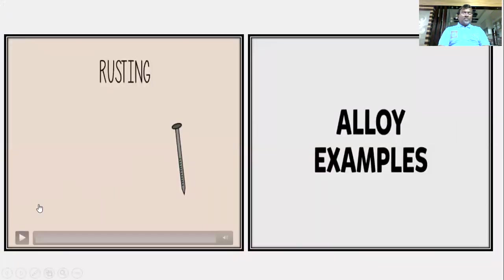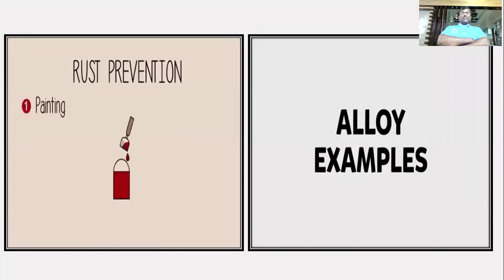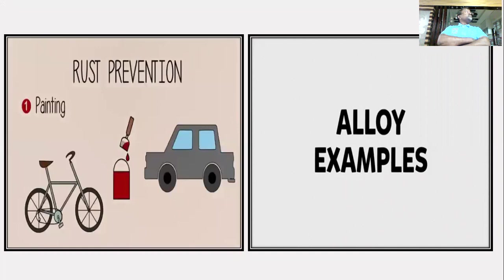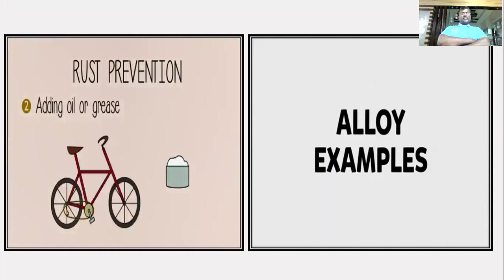Let us watch a small video about rusting and preventive methods. Rusting can be very costly if we have to constantly replace items made of iron and steel. Rust can be prevented by painting areas exposed to oxygen and moisture — this is done on many bicycles and cars. Another method is placing a layer of oil or grease on bicycle chains, which lubricates moving parts and slows rusting.